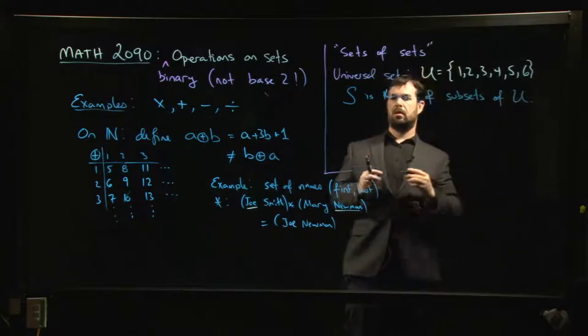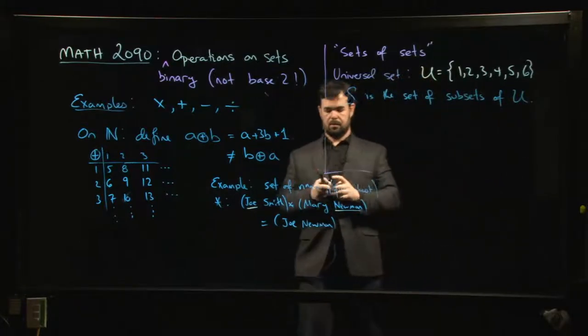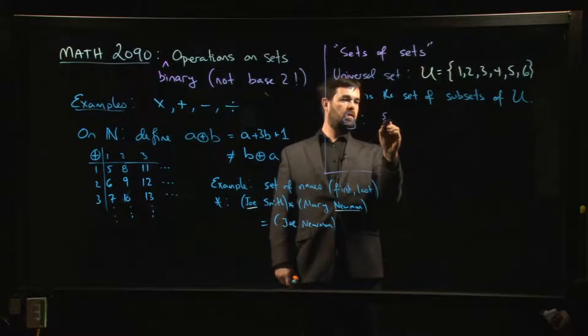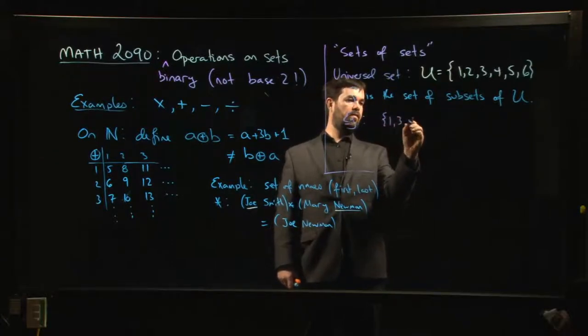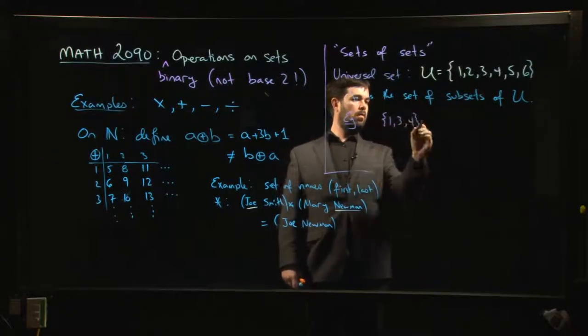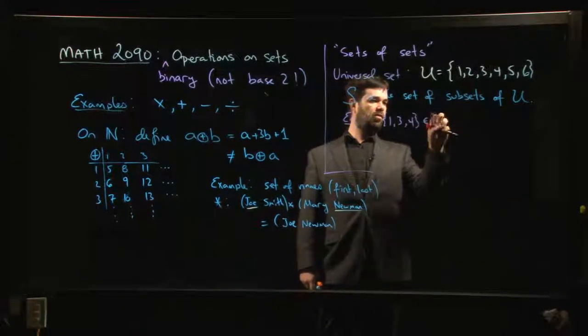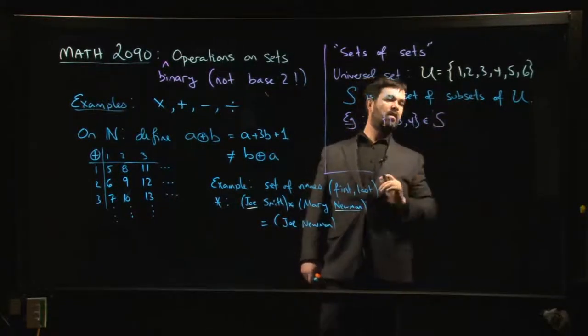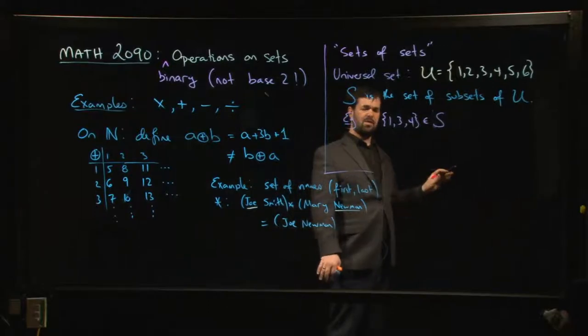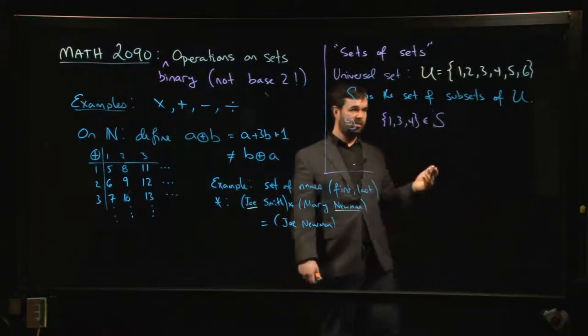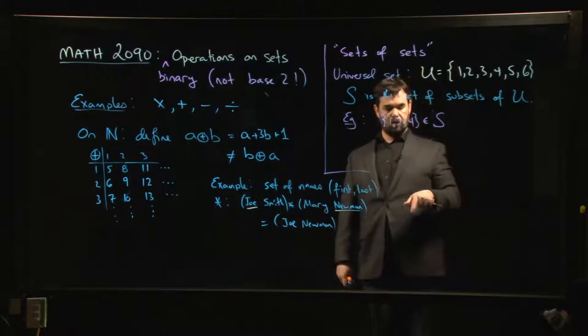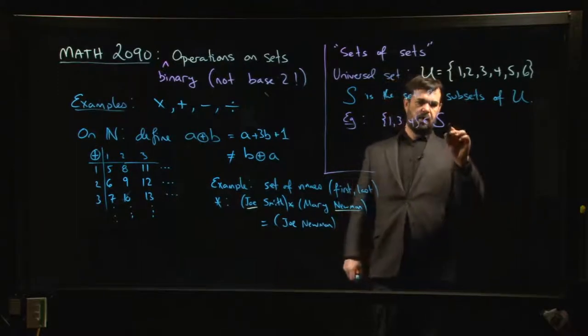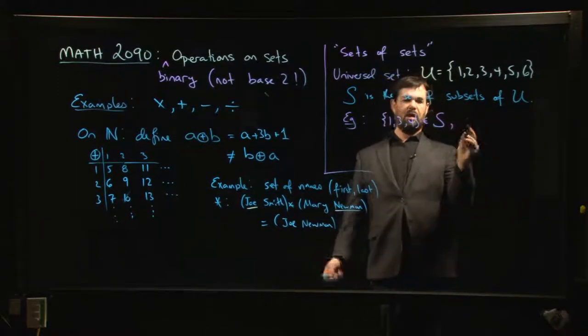So for example, the set - let's say one, three, four - that is something which is a subset of U, but that makes it an element of S. Don't worry if you get mixed up on the usage between element and subset, because lots of people do. That's something that trips up a lot of our Math 2010 students, and it's not something that will be a big concern for us. So that would be an element of S.